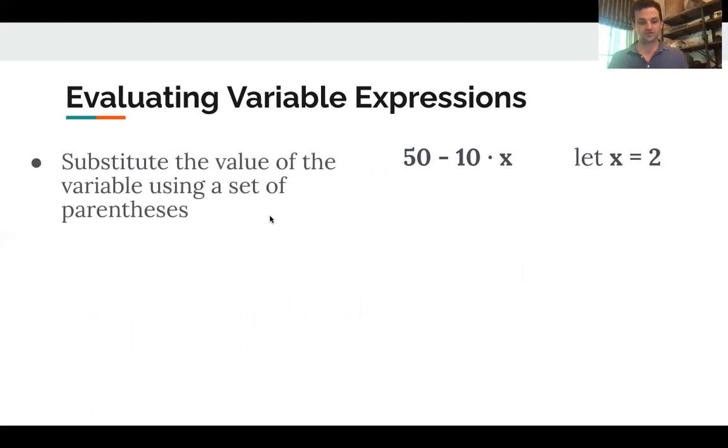So the first thing you're going to do is substitute the value of the variable using a set of parentheses. And the parentheses are really important for a couple reasons. One of them is, like we talked about in our integers unit, we want to make sure that it's clear whether a negative sign is a negative sign or a subtraction sign. And so if we put it in a set of parentheses, it's clear that it was a negative value. It's just always a good practice to do this.